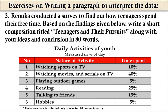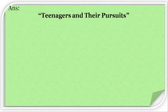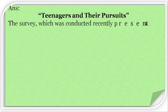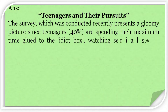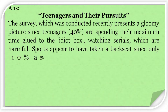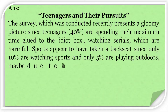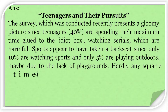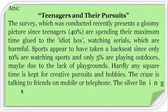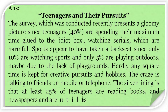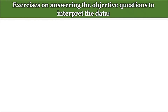Exercise two: Reynika conducted a survey to find out how teenagers spend their free time. Based on the findings given, write a short composition titled 'Teenagers and Their Pursuits' in 80 words. Answer: The title is 'Teenagers and Their Pursuits.' This survey presents a gloomy picture — 40 percent of teenagers spend maximum time watching serials. Sports have taken a backseat, with only 10 percent watching sports and only 5 percent playing outdoors, possibly due to lack of playgrounds. Hardly any free time is kept for creative pursuits. The silver lining is that 25 percent read books and newspapers meaningfully.